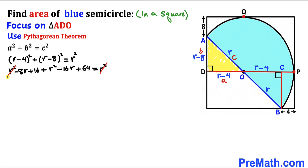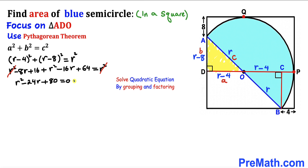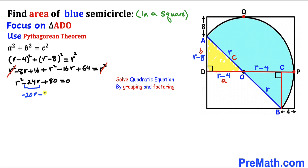Recalling the identity (a − b)² = a² − 2ab + b², we expand the left-hand side: (r² − 8r + 16) + (r² − 16r + 64) = r². We can see one r² cancels, and combining like terms on the left gives us r² − 24r + 80 = 0. This is our quadratic equation, which we will solve by factoring. The number 80 can be broken down as 20 × 4, and 20 + 4 = 24.